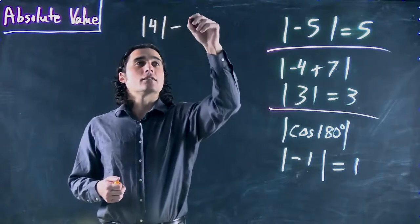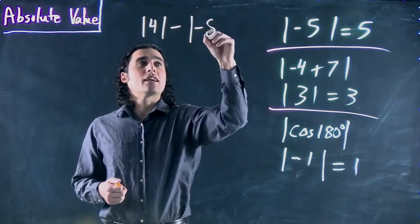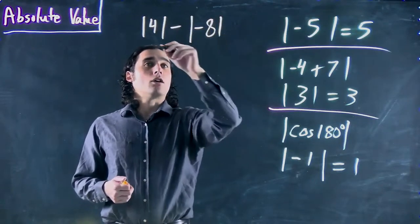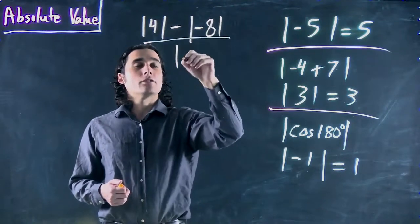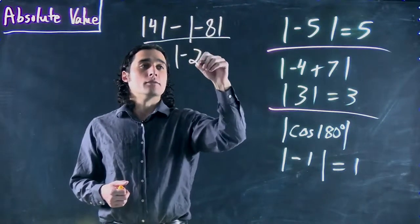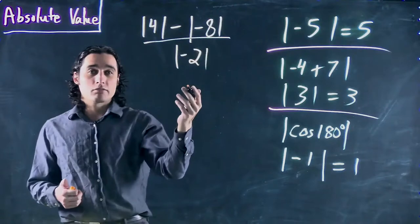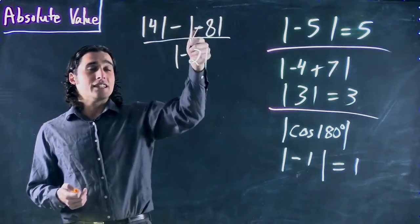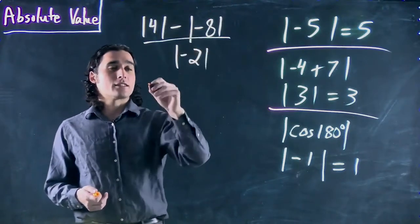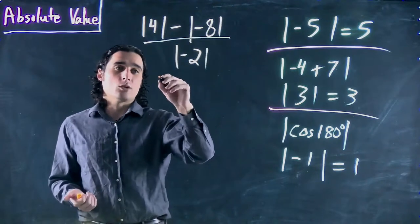We could have absolute value of 4, minus the absolute value of minus 8, all divided by the absolute value of minus 2. You can have multiple absolute values. Doesn't matter. You evaluate what's in each of them first. So this, absolute value of 4, well, is just 4.